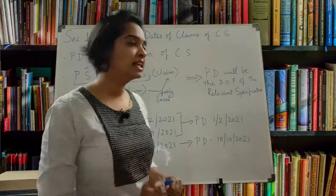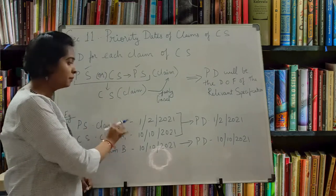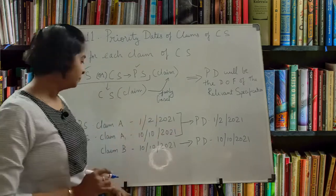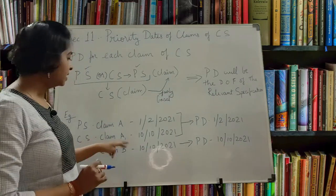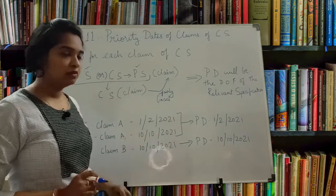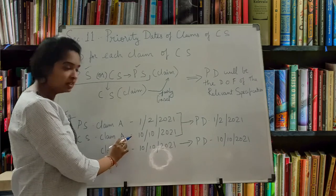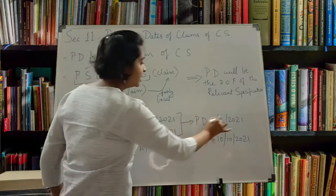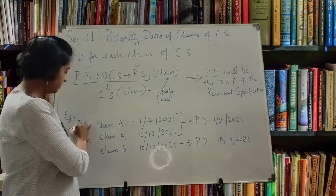Let's take an example. Suppose in the provisional specification you are mentioning Claim A, and the date of the provisional specification is 1-2-2021. Then in the complete specification you are filing two claims - Claim A1 and Claim B - both on 10-10-2021. Now, Claim A1 is based on Claim A. Since it is based on the provisional claim, the priority date for Claim A1 will be 1-2-2021, which is when you filed the provisional specification.